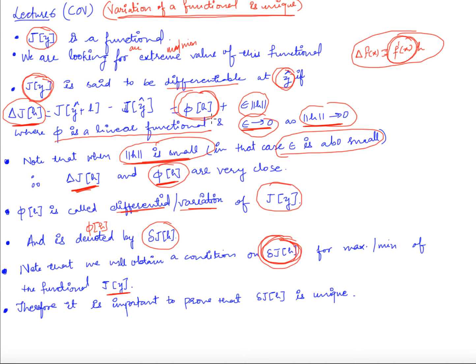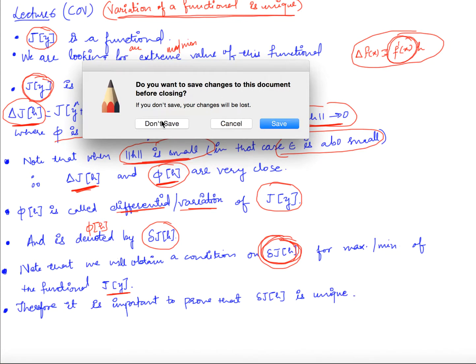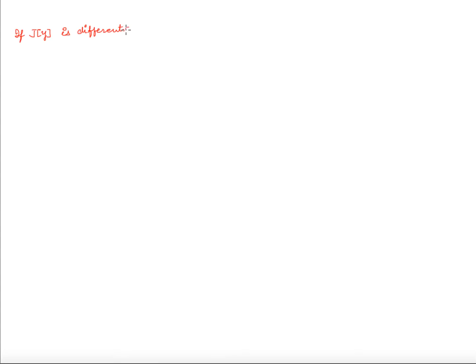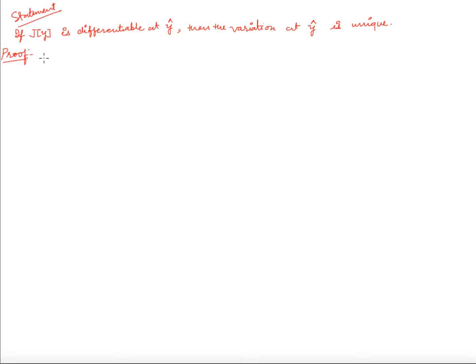In this video we will prove that this variation is unique. If a functional is differentiable at a function y-hat, then there exists a differential or variation φ(h), and we want to prove that this variation is actually unique. We will prove this by contradiction — we'll start by supposing the statement is not true.